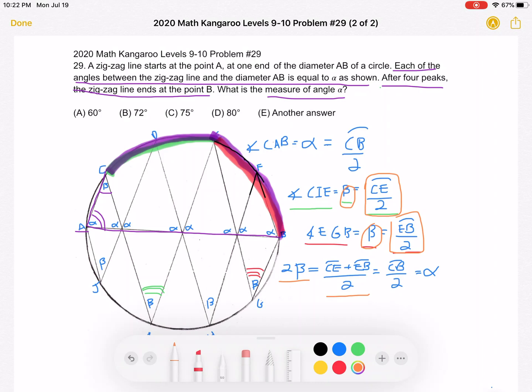And by definition, we know that, well not by definition, but by looking at the way we structured this diagram, we know that arc CE, which is this portion in green right here, CE, plus arc EB is equal to the entire arc CB. So we can add this top portion to get CB, and then we have the same denominator. So we end up with CB over 2.